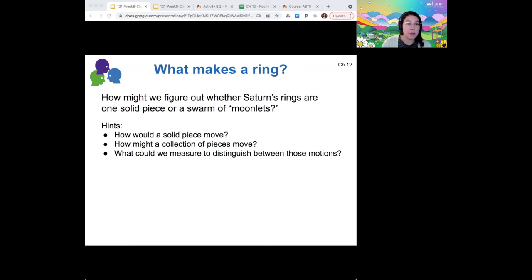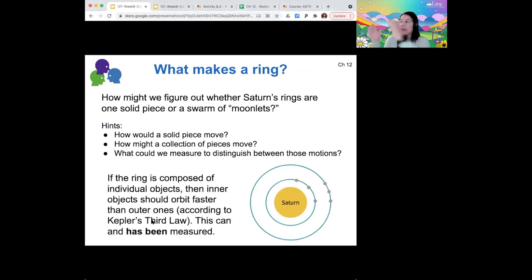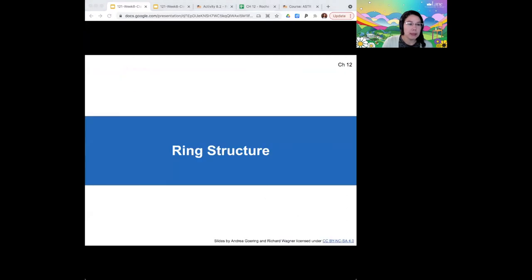What I had in mind was if a ring was a solid piece, then the inner pieces and outer pieces would all rotate around Saturn at the same rate. But if it's composed of individual objects, then because of Kepler's third law, the objects in the inner orbits should orbit faster than the objects in the outer orbit. You could look at individual features of the ring, even if you can't see if that's an individual particle. Maybe there's a particular bright spot that you can follow and see if it orbits faster or slower than a similar feature that you could track near the outside of the ring. This has been done, and indeed, this is how we can know for sure that Saturn's rings are a collection of small moonlets.